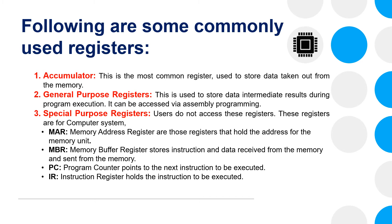General Purpose Registers: used to store data and intermediate results during program execution. They can be accessed via assembly programming. Special Purpose Registers: users do not access these registers — these registers are for the computer system.